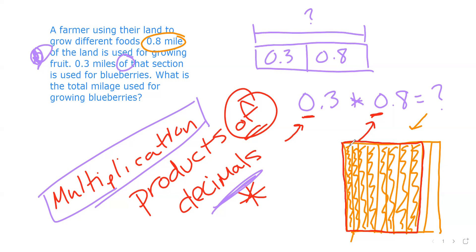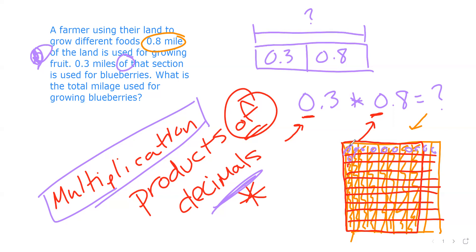Now, of this section — of the eight tenths — three tenths is devoted to blueberries. So I need to make tenths going this direction as well: one, two, three, four. And then three tenths of that gets marked — one tenth, two tenths, three tenths. That's the section devoted to blueberries.